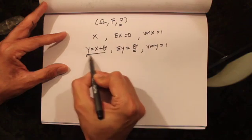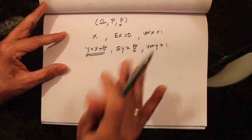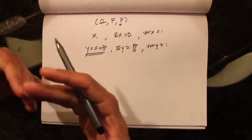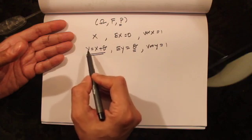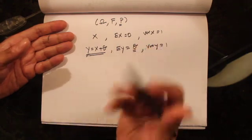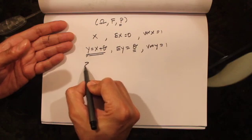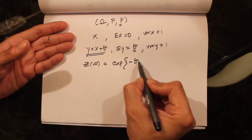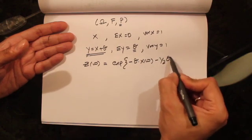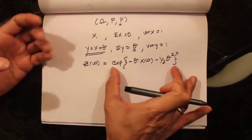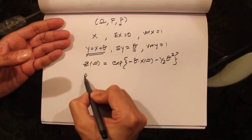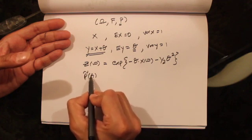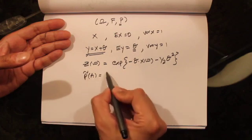We wanted to make Y a standard normal random variable by changing the probability measure. The random variable itself stays Y equals X plus theta, but we find an equivalent probability measure under which Y is distributed as standard normal. The way we did this was to define the Radon-Nikodym derivative Z of omega as the exponential of minus theta times X of omega minus one-half theta squared.